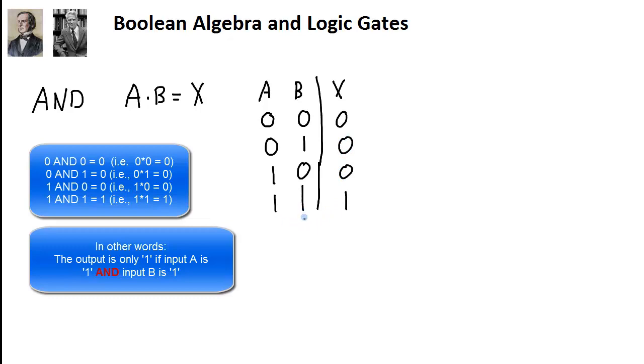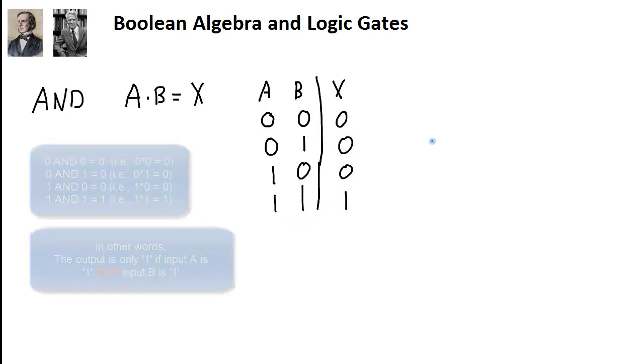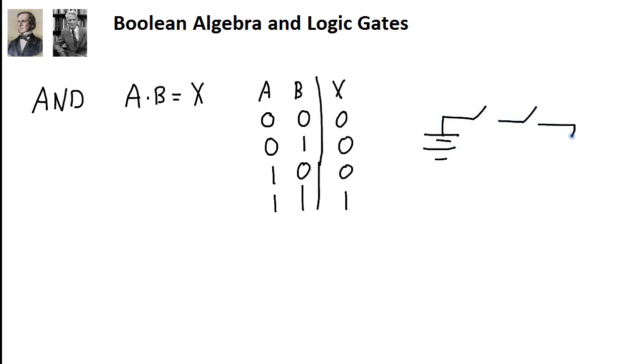Another way to think about this is as a circuit. Now this is just a conceptual idea, these aren't really logic gates. Let's say we have a circuit with a battery, and we've got two switches here, and these switches are powering a light bulb. Each one of these switches is A, well, one of the switches is A and the other switch is B. The only time the light bulb will turn on, if that light bulb is X, is if A is closed and B is closed, or A is on and B is on. Both A and B have to be on in order to complete the circuit and to turn on the light bulb X.